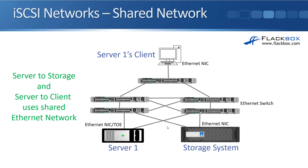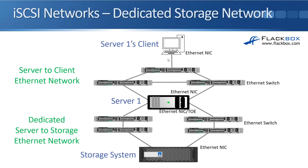Looking at the different network options when using iSCSI: because it uses standard Ethernet, we can use the same shared network as our normal data traffic. In this example, server one in the bottom left is the initiator — the SAN client — and its storage is available over the same Ethernet network used to connect to clients as well, with everything sharing the same network.